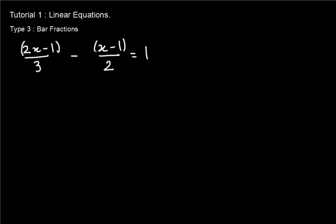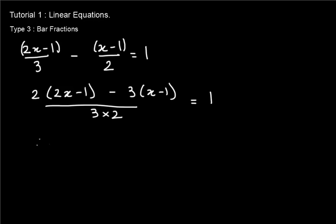Then multiply 2x minus 1 by 2 and 3 into x minus 1, a cross multiplication rule, and the denominator will be 3 into 2. So doing so we get 2 into 2x minus 1 minus 3 into x minus 1 divided by 3 into 2, which is equal to 1. So our next step would be 4x minus 2 minus 3x plus 3, minus 3 into minus 1 is plus 3, divided by 6, which is equal to 1.